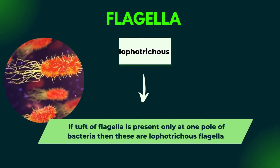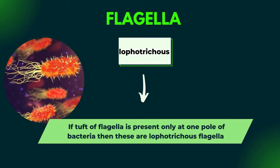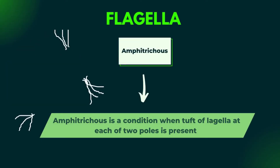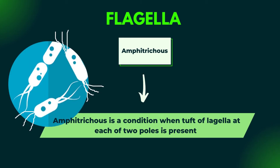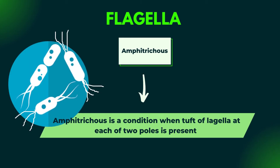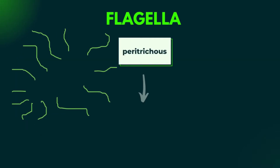If a tuft or bunch of flagella is present only at one pole, not at both poles, then these are Lophotrichous. Amphitrichous — when a tuft of flagella is present at each of the two poles, when tuft of flagella is present at both poles, then it is called Amphitrichous.